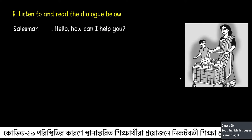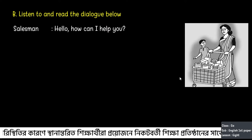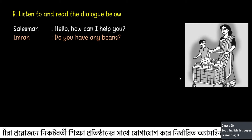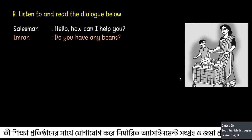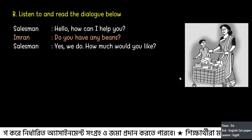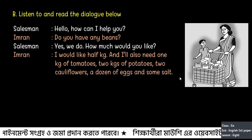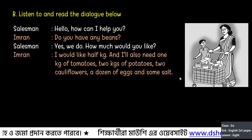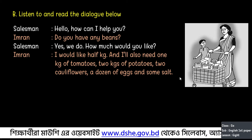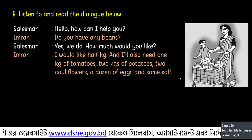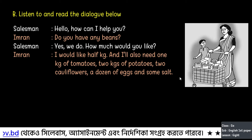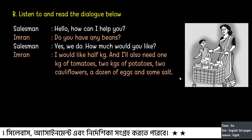Salesman asks: Hello, how can I help you? Imran replies: Do you have any beans? Salesman says: Yes, we do. How much would you like? Imran says: I would like half a kg. And I will also need 1 kg of tomatoes, 2 kg of potatoes, 2 cauliflowers, a dozen eggs, and some salt.